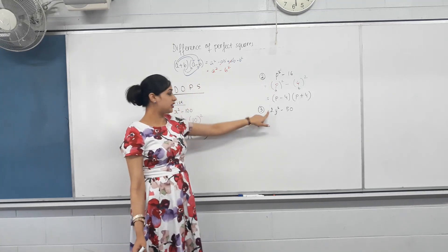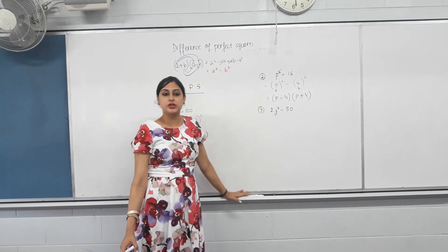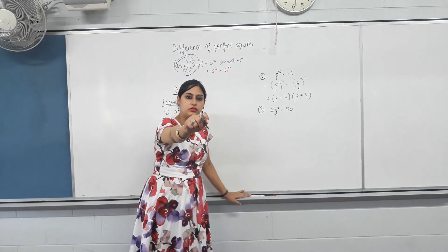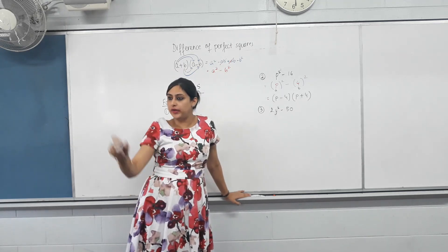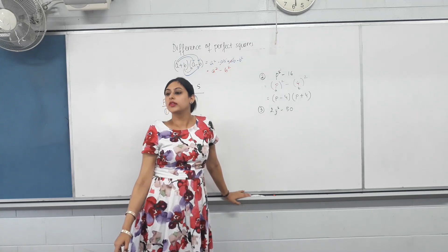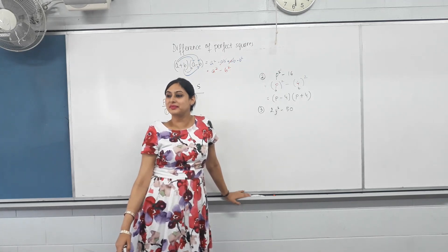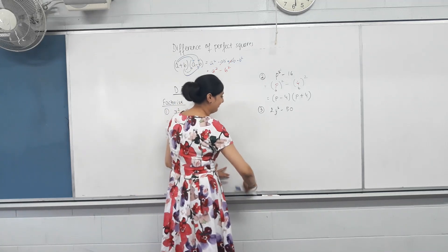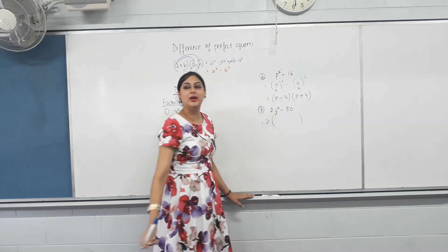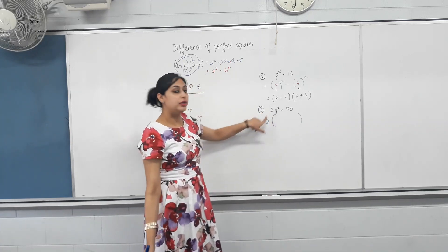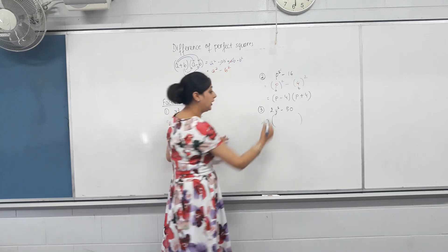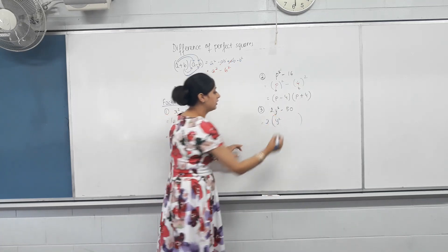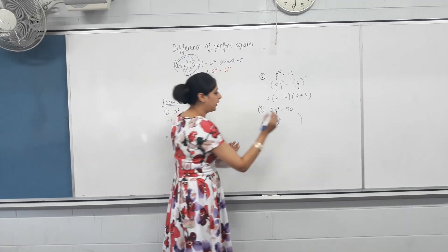Now, two is not a perfect square. Fifty is not a perfect square. All right, what's the first step for any factorization? Look for a common factor. Is there a common factor? There is. Look for it. What is it? Two. I'm talking to him. What is it? Two. Well done. So, two divided by two is? One. One. So, we're going to have one Y squared. No talking when I'm talking. Minus? Twenty-five. Forty-five, I heard. Twenty-five. Twenty-five.